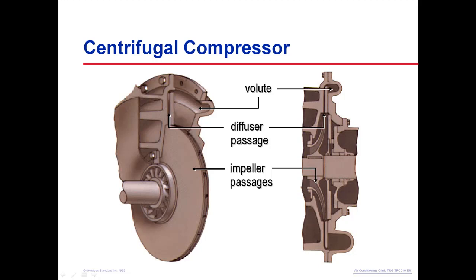The accelerated refrigerant vapor leaves the impeller and enters the diffuser passages. These passages start out small and become larger as the refrigerant travels through them. As the size of the diffuser passages increases, the velocity, and therefore the kinetic energy, of the refrigerant decreases. The first law of thermodynamics states that energy is not destroyed, only converted from one form to another.